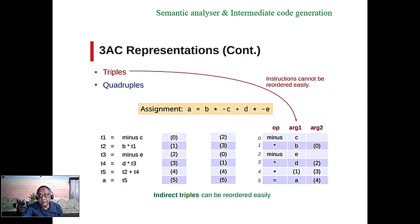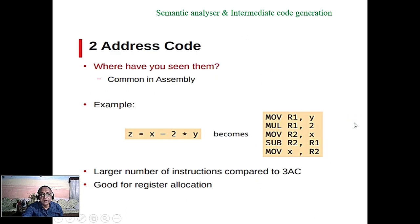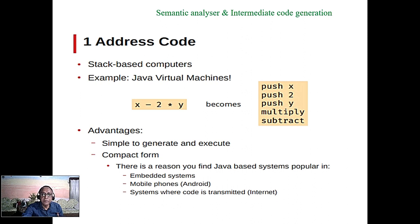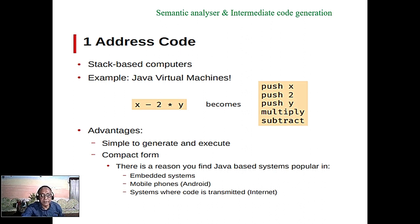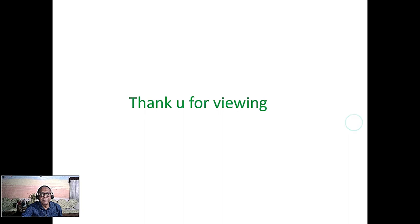Triple instructions cannot be reordered easily, while quadruples can be reordered. There are also two address code forms. One address code is typical of stack-based computers, where everything happens at the top of the stack — that is a single address. Two address code operates with two addresses.